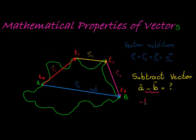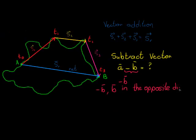What is negative a vector? And it's not so difficult to grasp because simply a negative vector is vector B in the opposite direction.